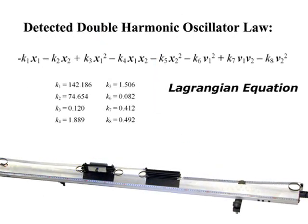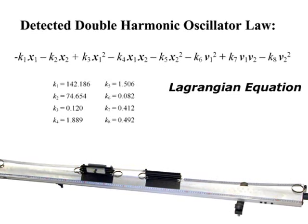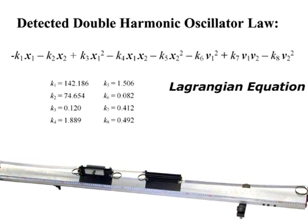The law found for the air track in this search was the Lagrangian equation. This equation relates to the system's kinetic and potential energy.